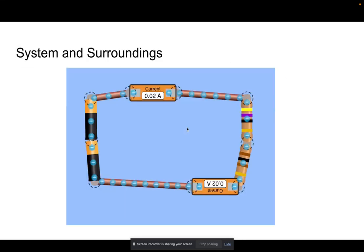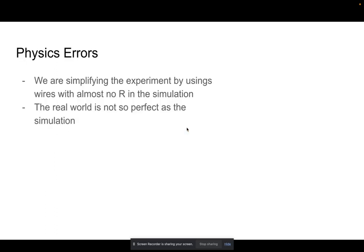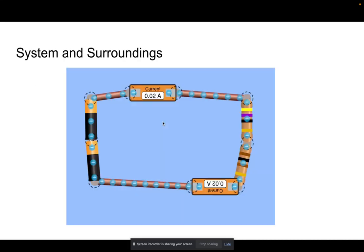For physics errors, obviously we are simplifying the experiment. There's almost no error value in this simulation, because there's no error and the real world is not so perfect as this experiment.